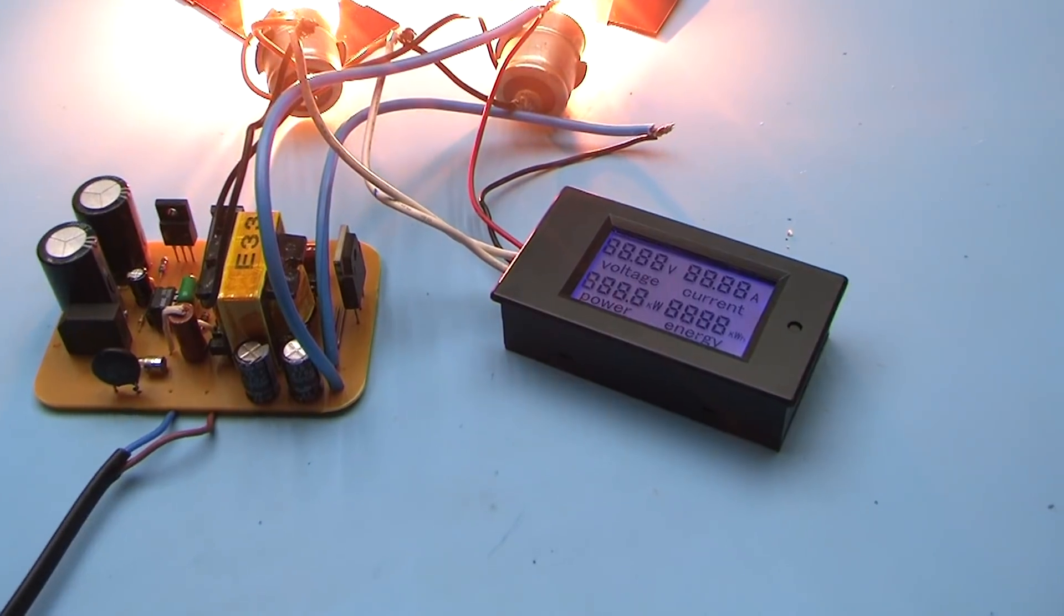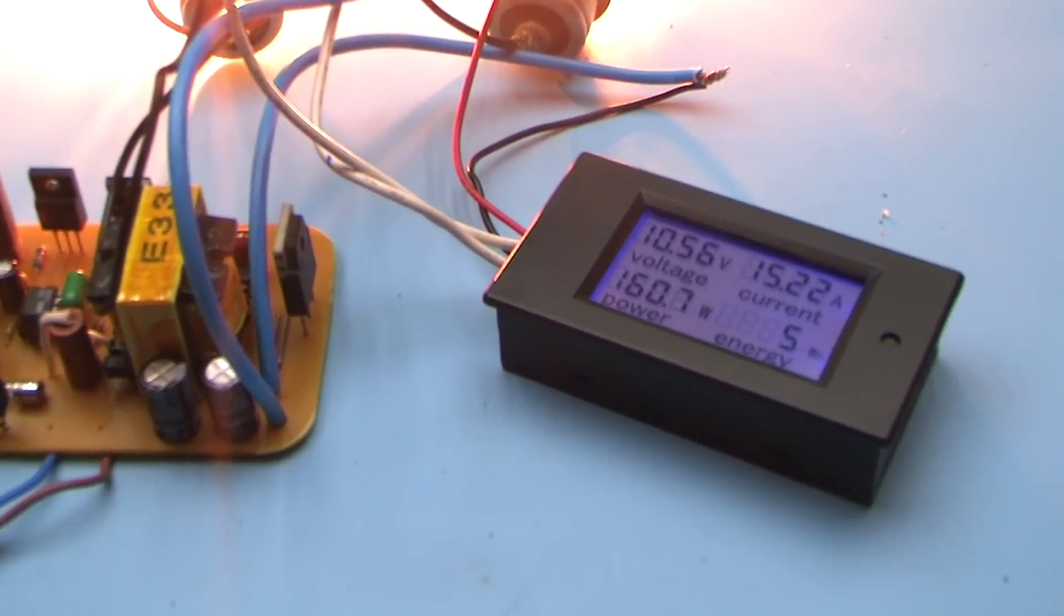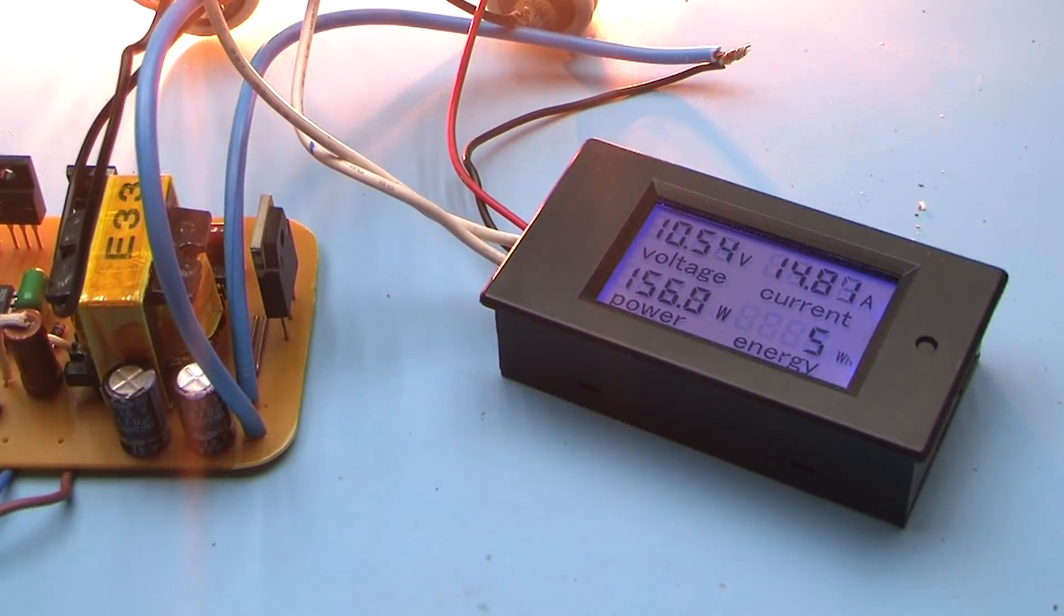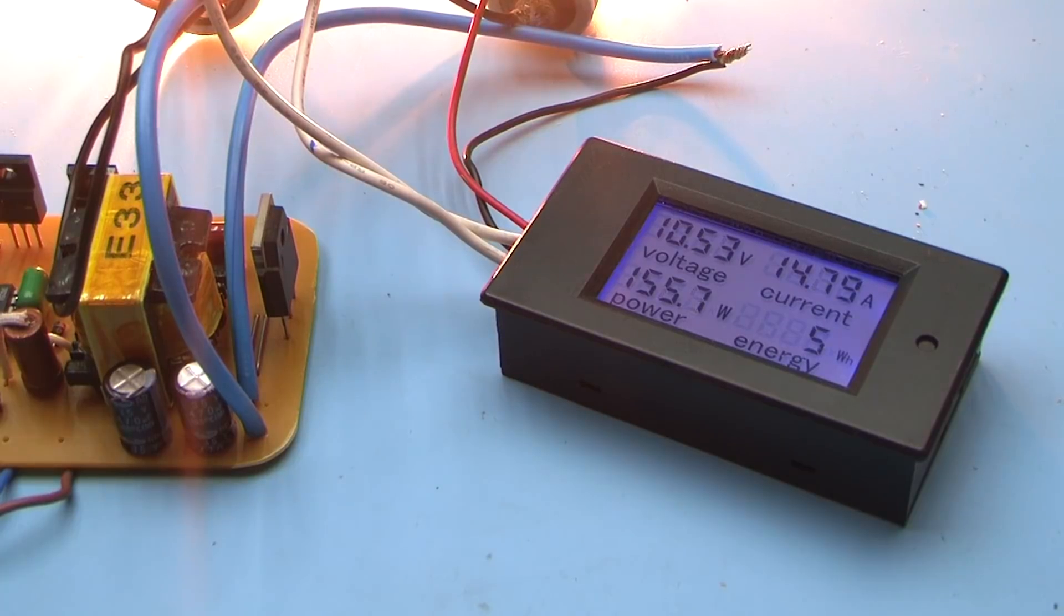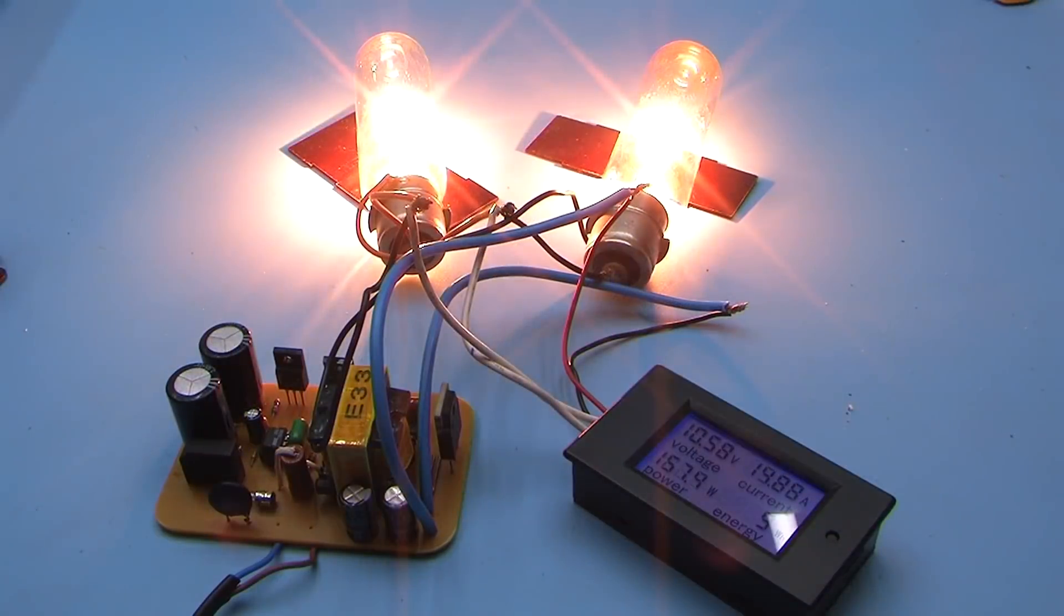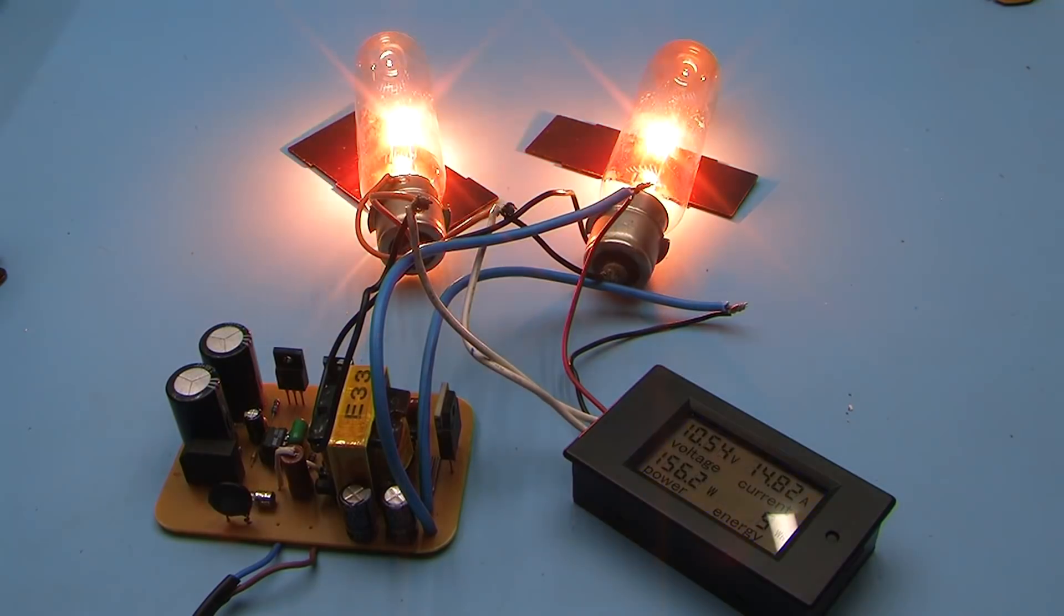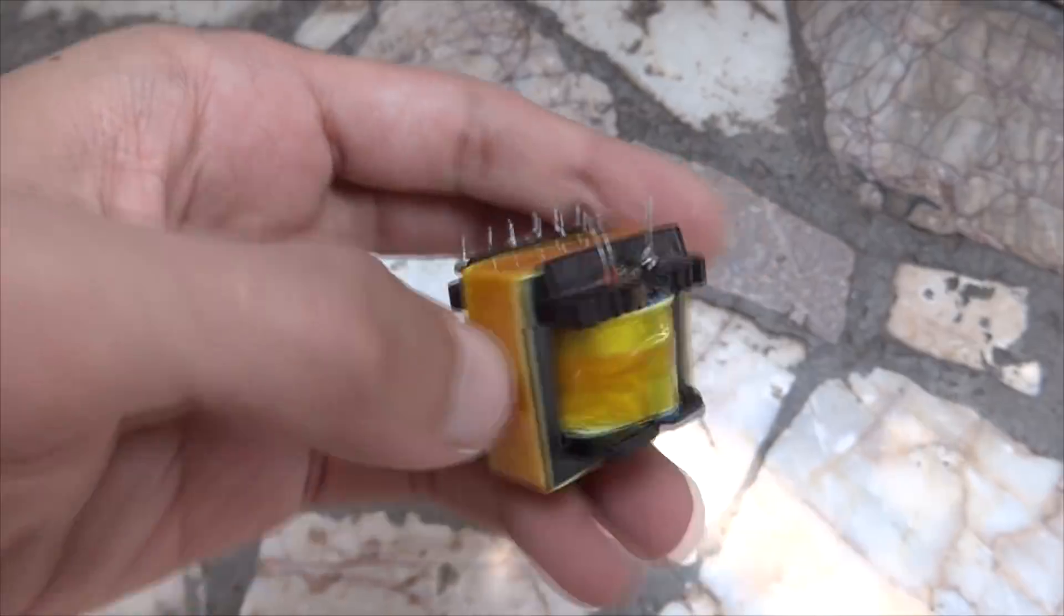During this test, it is seen that with a load of 160 watts we have quite a noticeable drawdown of the output voltage. But notice that the power components are without radiators, and they are very hot, thereby reducing the overall efficiency of the circuit.